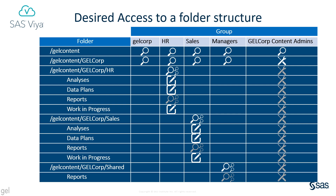The HR group needs to see the HR folder and its contents, so we implement the group read convey pattern as an HR read convey pattern and apply that to the HR folder. Members of HR should be able to add, remove, and change the contents of the analyses, data plans, and work in progress folders, but not the reports folder. So we implement the group edit contents pattern as an HR edit content pattern and apply that to just those three folders. The reports folder is intended for final versions of reports added by a Gelcore content admin, so HR have inherited read access to it but no additional permissions are granted.